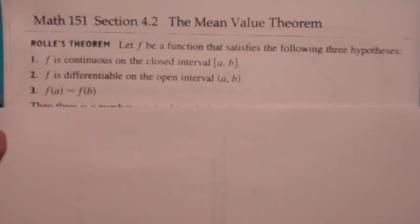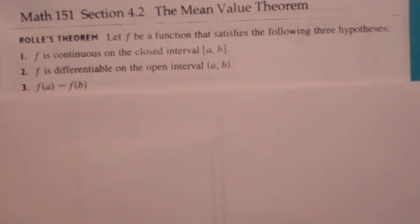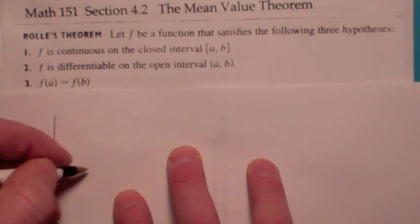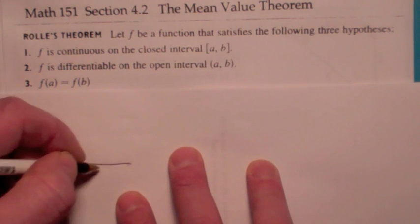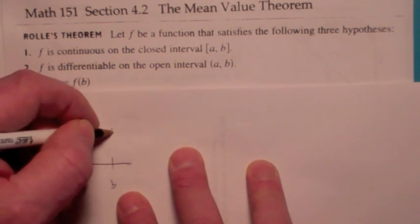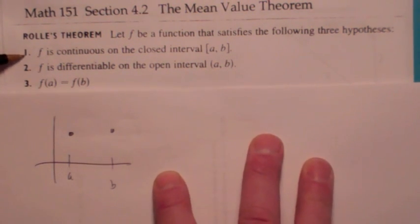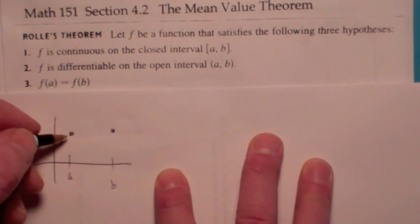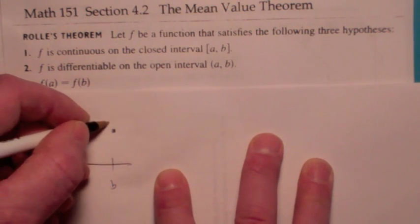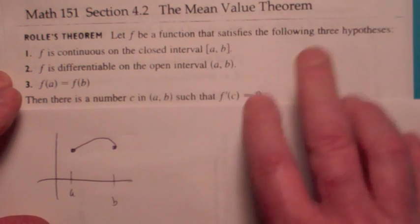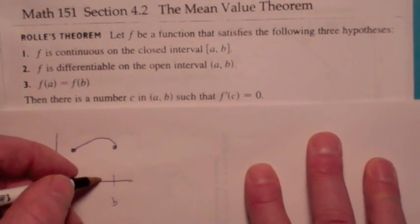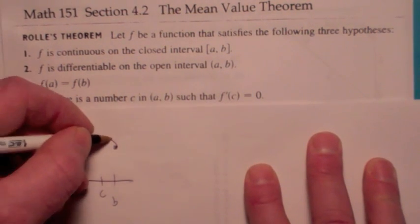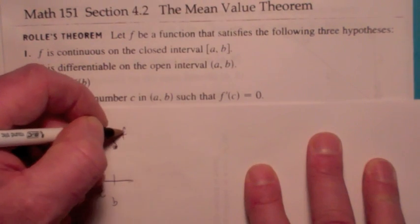Rolle's Theorem says if you have a function that satisfies three conditions — let's look at the third condition first: f(a) equals f(b). Then it's continuous on the closed interval and differentiable on the open interval. So when you draw the graph, you can't have any jumps, vertical asymptotes, corners, or vertical tangents. What Rolle's Theorem says is there has to be a number somewhere between a and b, in the open interval, x equals c, where the derivative is zero — f'(c) has to equal zero.